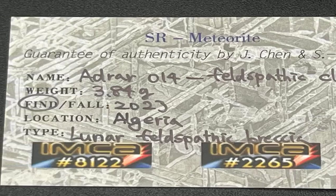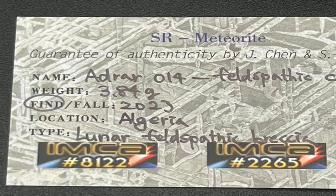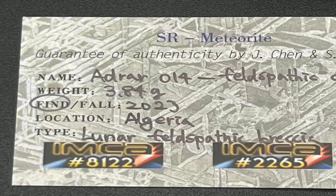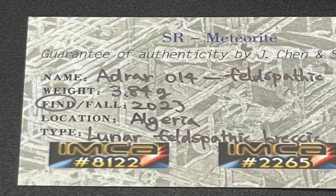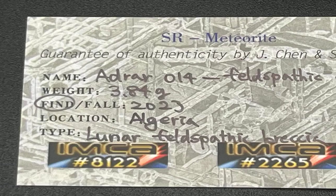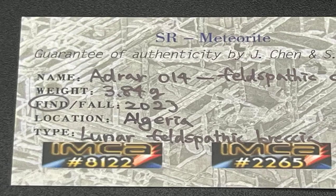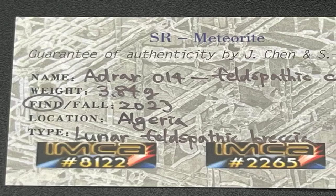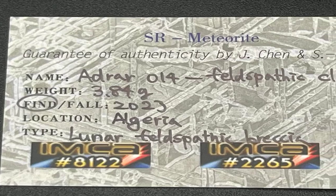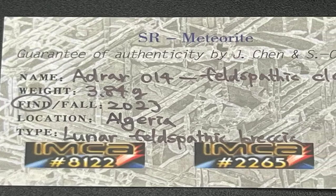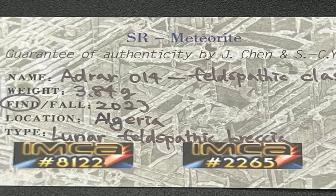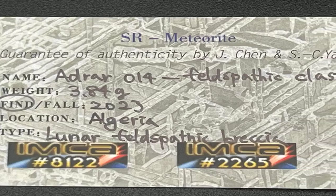Geochemistry by A. Love (app.): Clasts — olivine: Fa22.8±6.8, Fe/Mn=78.6±4.2, n=7. Low-Ca pyroxene: Fs16.4/2.4, Fe/Mn=49, n=1.